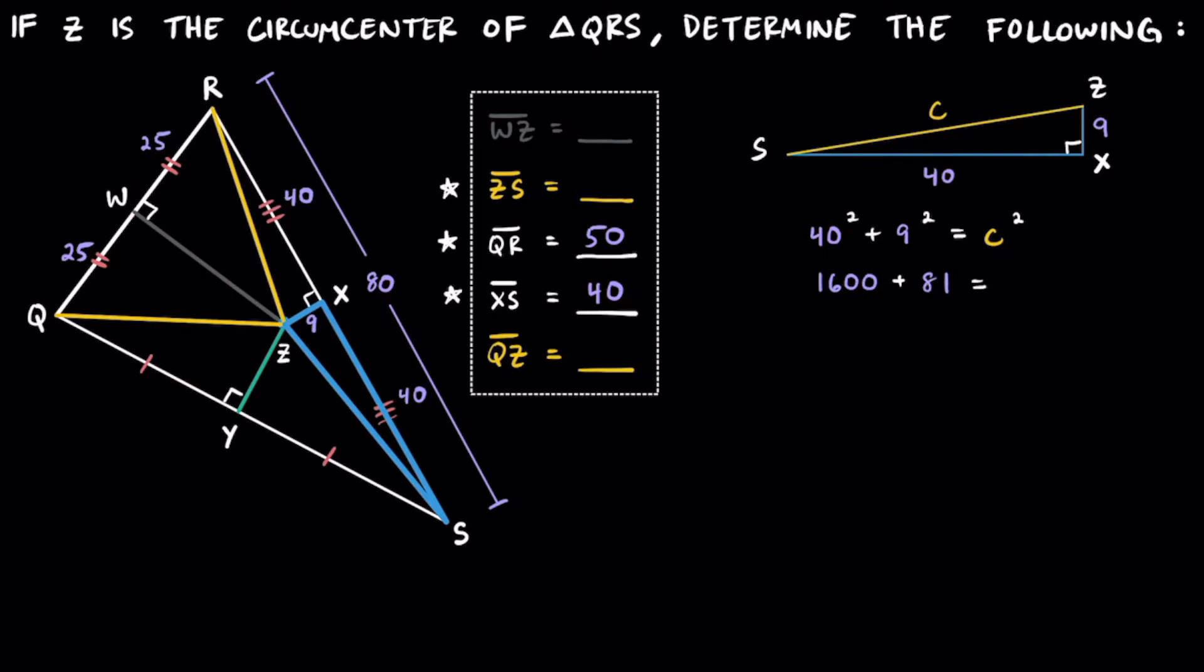If we go ahead and add the 1600 and 81, we're going to get 1681, and that's going to be equal to that C squared again on the other side. And then if we just go ahead and take the square root from both sides, we're going to find out that C is going to be equal to 41.